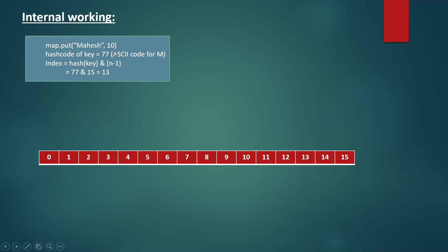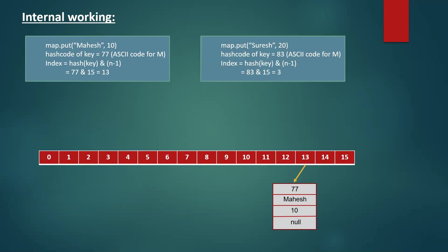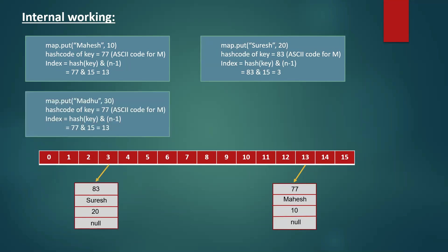So we insert the entry at index 13 with the node structure containing hash, key, value, and a null node reference since there is no next node. Now inserting the second entry 'Suresh' with value 20: the ASCII code of 'S' is 83, and the index is calculated as 83 & 15 = 3. So the entry for Suresh is inserted at index 3. We proceed to insert the third entry in the same way.